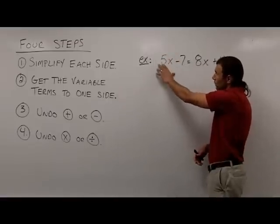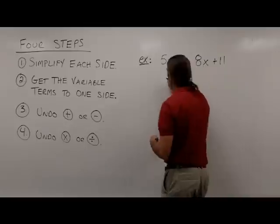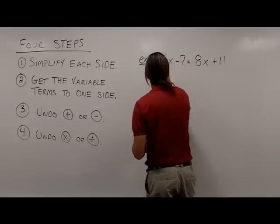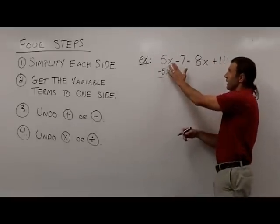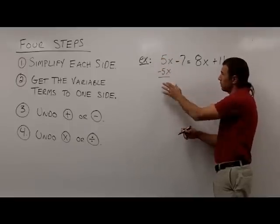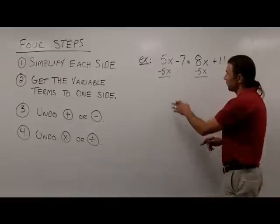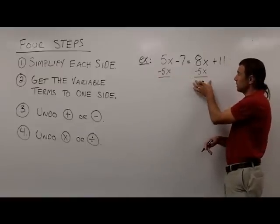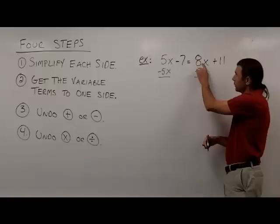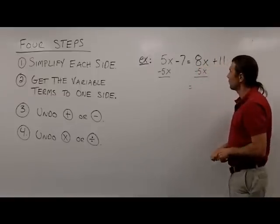The way I'm going to get rid of this 5x from this side is by subtracting it. If I take 5x and subtract 5x from it, I'm going to get 0, which will essentially remove the variable terms from this side. Whatever I do to one side, I have to do the same thing to the other. So I'm subtracting the 5x from the 8x, because those are my like terms on the right side. Let's rewrite the equation now and see what we have.